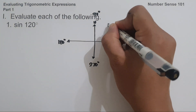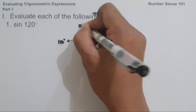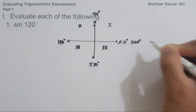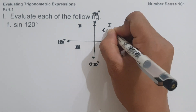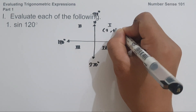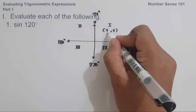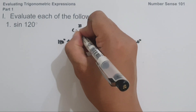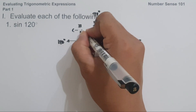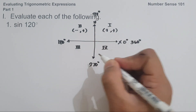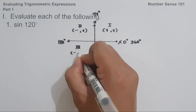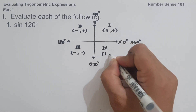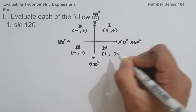So this is quadrant 1, quadrant 2, quadrant 3, and quadrant 4. In quadrant 1, the signs are positive value for x and positive value for y. In quadrant 2, we have negative value for x and positive value for y. In quadrant 3, they are both negative. In quadrant 4, we have positive value for x and negative value for y.